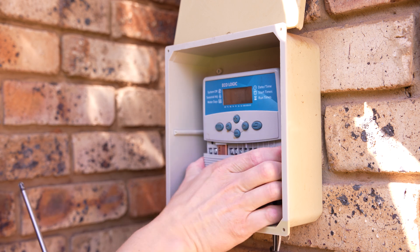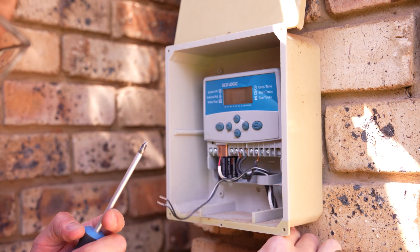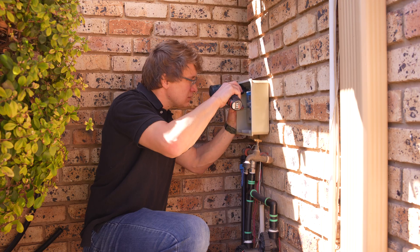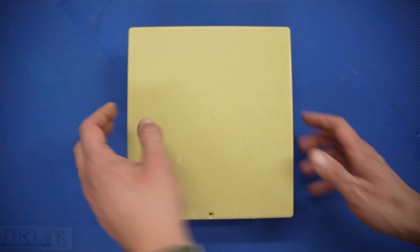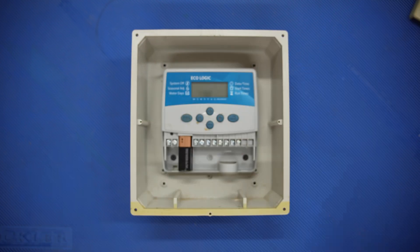My current controller sits outside in a waterproof enclosure. Now I want to reuse the enclosure so my first step was to disconnect the old one, remove it from the enclosure to reinstall the new one within it.